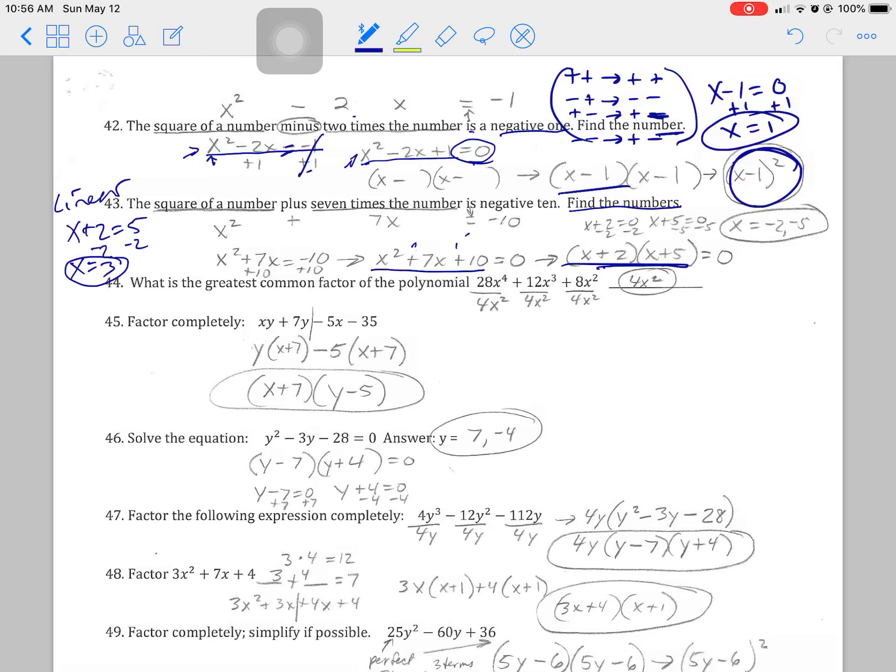So when it says, I think the instructions, well, I know the instructions on the final are much more detailed. So make sure you're following. Does it say it just wants an equation? Does it say it just wants you to factor? Or does it want you to solve for x? So if you're factoring and then you need to solve for x, make sure you set, follow the 0 product rule and set your factors to equal 0.